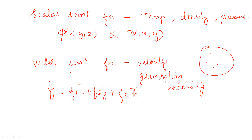Vector point function means, for example, you can say velocity of a moving fluid at any instant of time, and gravitational intensity of force — all those things are vector point functions. Generally we denote it by f-bar, where the bar notation denotes vector point function. We write it as f1·i + f2·j + f3·k.